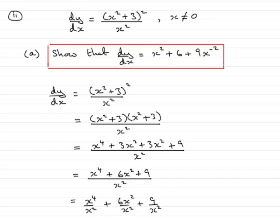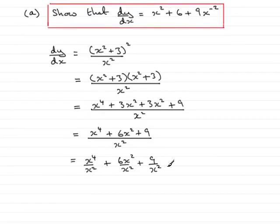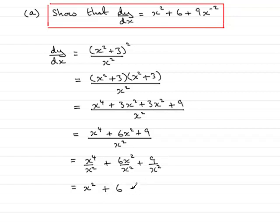Now we have 3 terms on the top divided by a single term on the bottom, which is the same as dividing each term by x². So that's x⁴/x² + 6x²/x² + 9/x². Dividing each of those by x²: x⁴/x² is x², 6x²/x² cancels to just 6, and 9/x² is the same as 9x⁻². So that gives us what we had to prove.